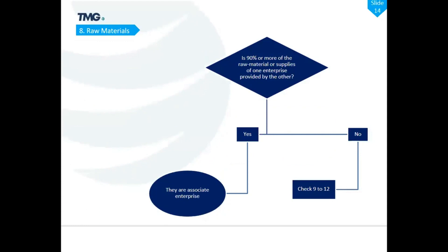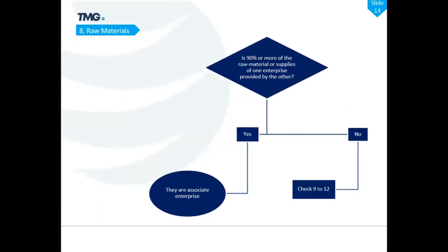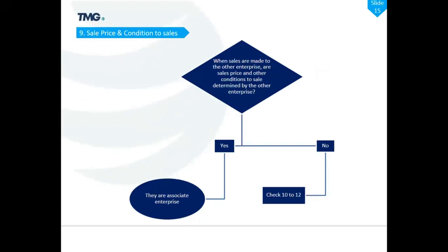The eighth criteria covers raw materials with a threshold: if 90% or more of the raw material or supplies of one enterprise is provided by the other, they are associate enterprises. While the previous criteria related to dependency on know-how, patents, and copyrights, this criteria is specifically about raw material supply, with the 90% threshold requirement.